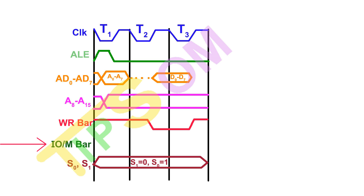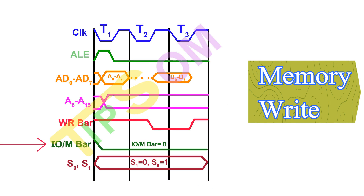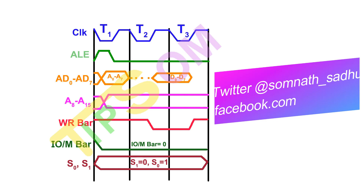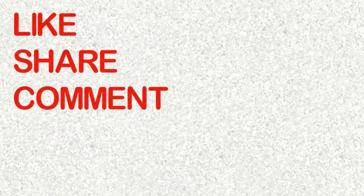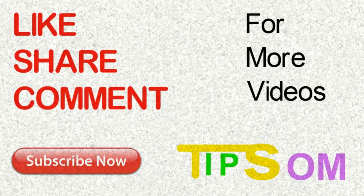Now I have covered three timing diagrams: memory read, input/output read, and input/output write. The last timing diagram is memory write. For memory write, only the IO/M bar changes back to 0 because it is a memory operation again. So IO/M bar is now 0 — that's what distinguishes this as a memory write diagram. I have now covered all four timing diagrams in this video. If you found this video helpful, please like, share, and comment if you have any queries. Subscribe to SomeTips for more 8085 timing diagrams and programming content soon. Thanks for watching!